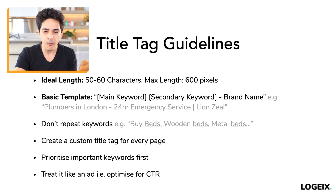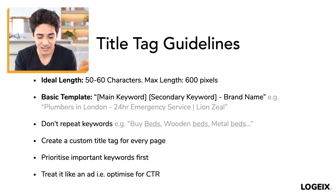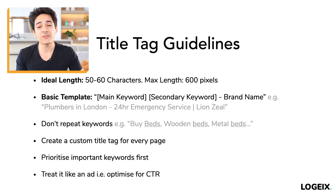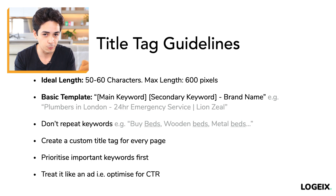I also recommend creating a custom title tag for every page — this comes up in auditing. If you don't do anything, you'll end up with tons of pages with identical title tags. Make sure there's a custom one for every page: every product, every category, everything. If you're starting out, you can use a template like 'buy product name online' that just swaps out the product name. In the future, you may want to go in and customize further.